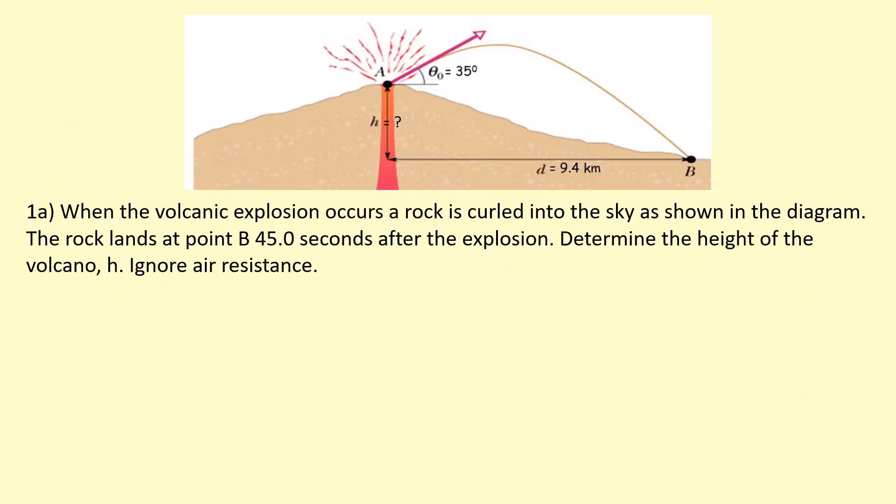In this question, a volcano explosion is causing a rock to be hurled into the sky at an angle of 35 degrees from the horizontal. We don't know what speed it's being fired at. We notice 45 seconds in the air before it hits point B, which is 9.4 kilometers away horizontally. Determine the height H, ignoring air resistance.